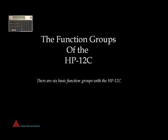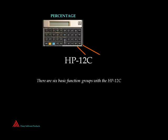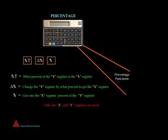First of all, let's look at the function groups of the HP-12C. There are six basic function groups in the HP-12C. We'll start with the percentage functions. There are three keys for the percentage functions: the percent T, the delta percent, and the percent sign.